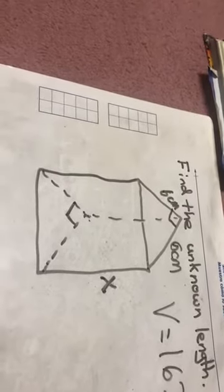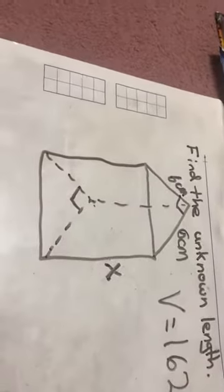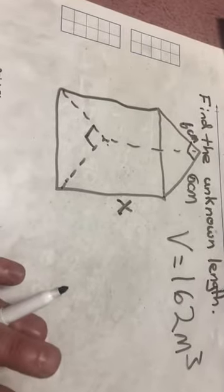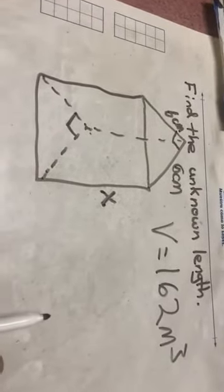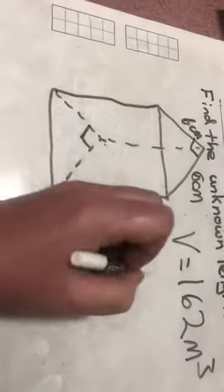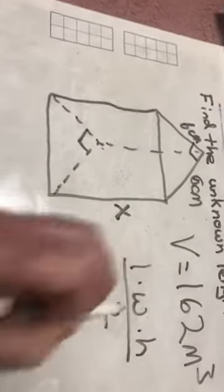And then I can see that this distance right here is x. So I want to think now, how am I going to go about solving this? Well, remember for a triangular prism, it's length times width times height divided by two.